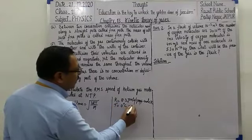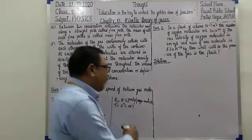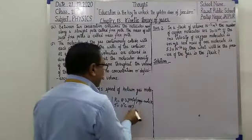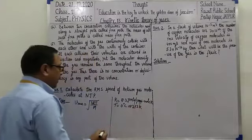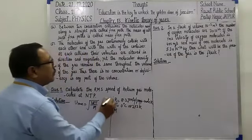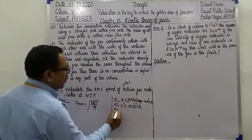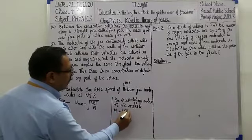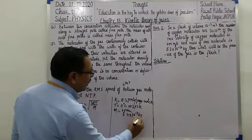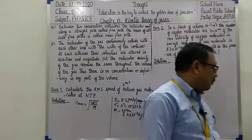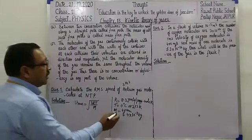T جو ہے، وہ NTP پر 0 degree Celsius ہے۔ اگر اسے Kelvin میں convert کریں تو 0 + 273 = 273 Kelvin۔ اب mass کی بات آتی ہے تو helium یعنی ²He⁴، اس کا mass 4 gram ہوگا۔ جب kilogram میں convert کریں گے تو 4 × 10⁻³ kg۔ اب ہمیں gas constant، absolute temperature اور mass given ہیں۔